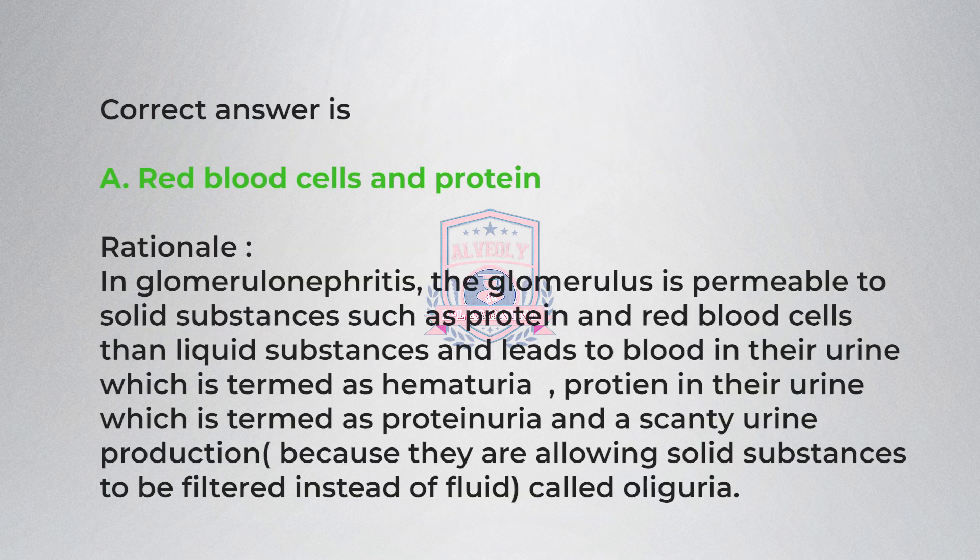Correct answer is A, red blood cells and protein. Rationale: In glomerulonephritis, the glomerulus is permeable to solid substances such as protein and red blood cells rather than liquid substances, leading to blood in the urine — termed hematuria — and protein in the urine — termed proteinuria.